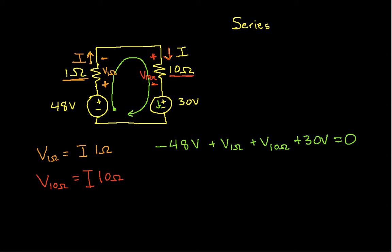Okay, now I'll do a little bit of math. I'll move this guy and this guy to the other side of the equal sign. So I have V1 ohm plus V10 ohms is equal to 48 volts minus 30 volts.